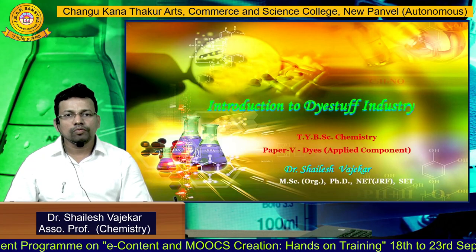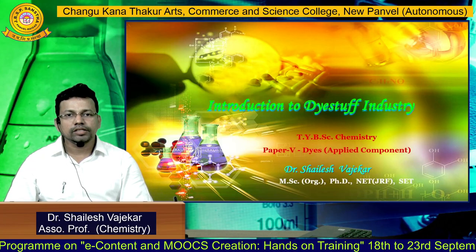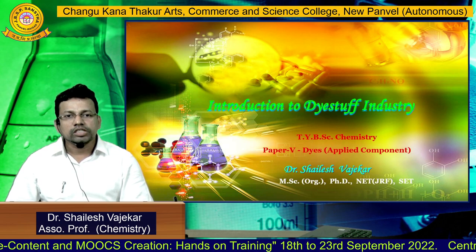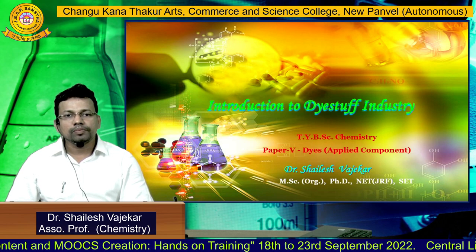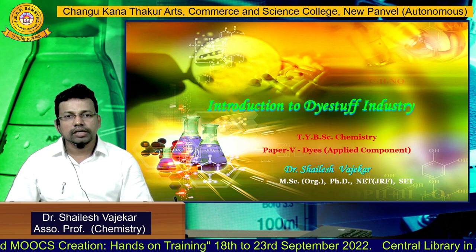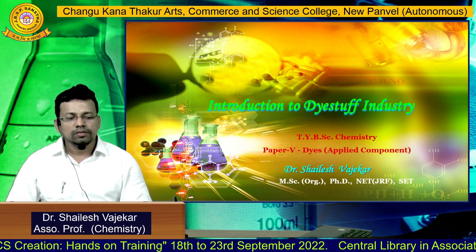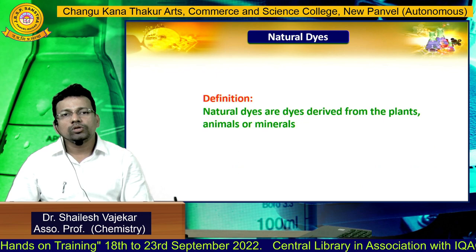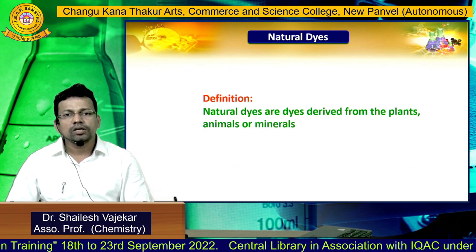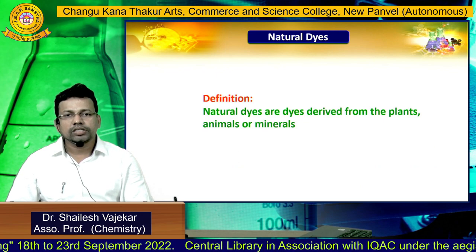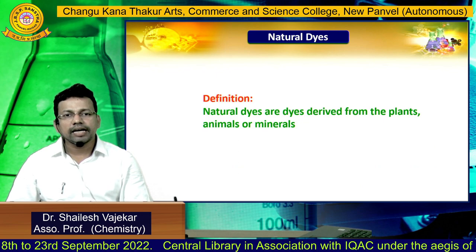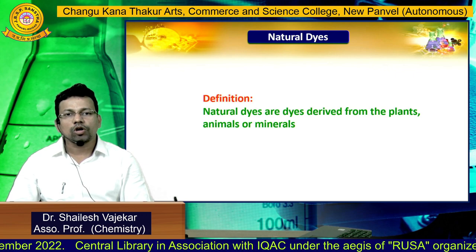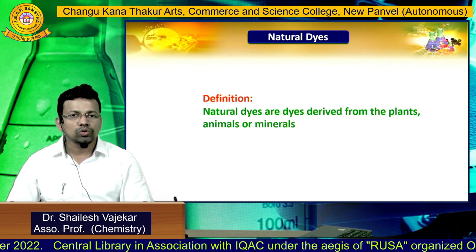Welcome, students, to this lecture on introduction to the dyestuff industry. This is Paper Number 5, which is Dyes, an applied component. Today we are going to discuss natural dyes. Natural dyes are dyes which are obtained or derived from plants, animals, or minerals — these are their natural origins.